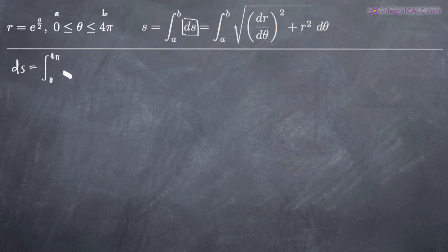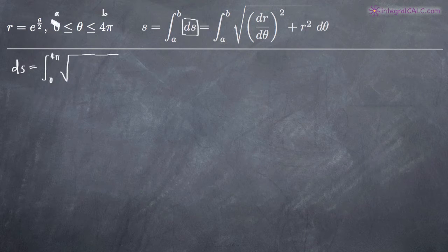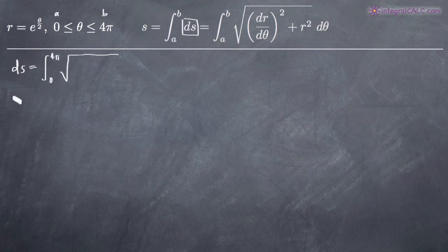And then we're going to be taking the square root here of dr over dθ, which is the derivative of the function r — r equals e to the theta over two. So to take the derivative of that function, we'll just call it r prime.